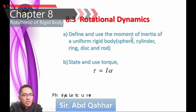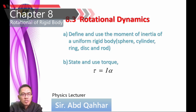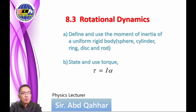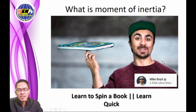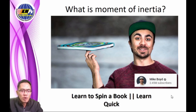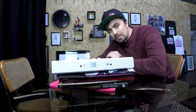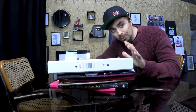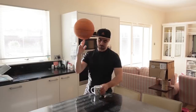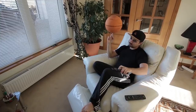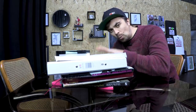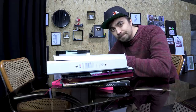Rotational dynamics: in this chapter we will define and use the moment of inertia of a uniform rigid body. To understand the concept of moment of inertia, let us watch a video from a YouTube channel entitled 'Learn to Spin a Book'. The goal is to spin a book on a fingertip for 30 seconds as quickly as possible. The presenter can already spin a basketball on a finger and expects spinning the book to be easy.